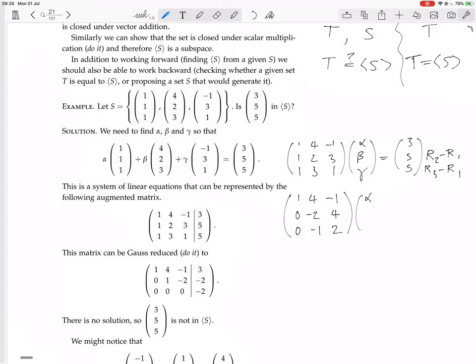And we still have the alpha, beta, gamma there. And here we have 5 minus 3, it's 2. And we have 5 minus 3 again, it's 2.